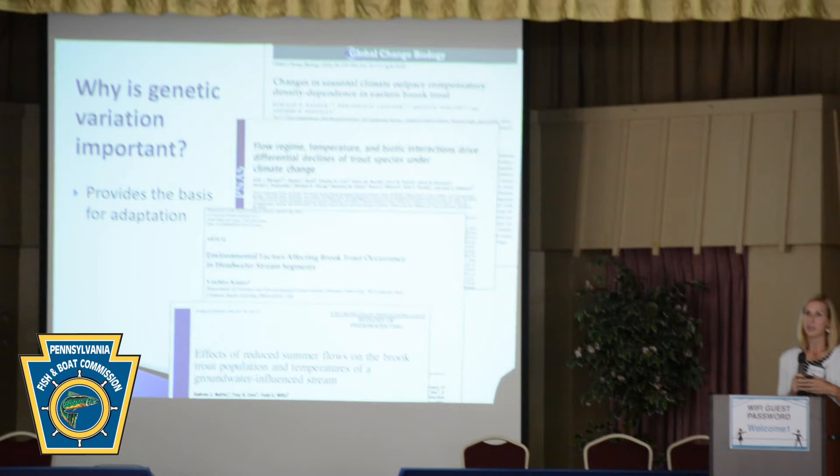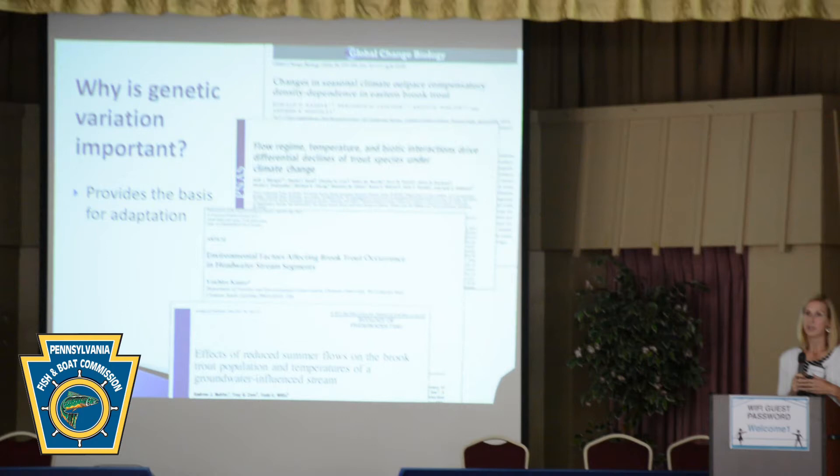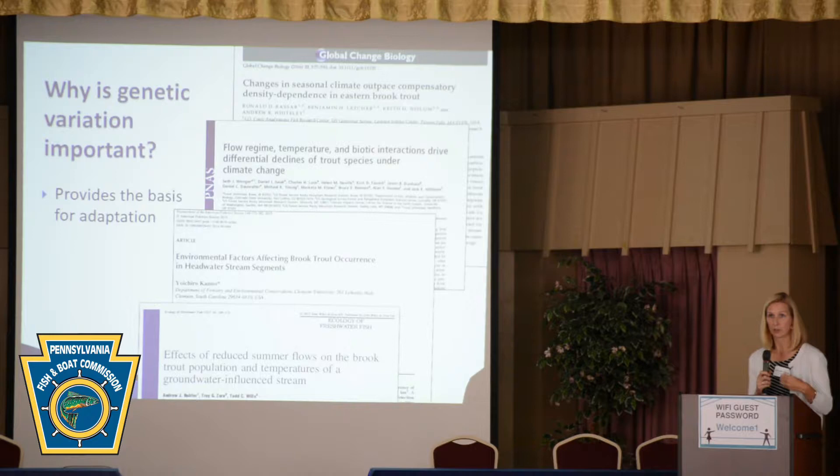With all of these threats, and thinking about the future and over time, these are going to play out on brook trout populations over multiple generations. The ability of those brook trout populations to persist and also adapt to these changing habitat or environmental conditions is a function of the underlying genetic diversity of those populations.